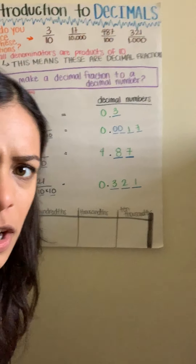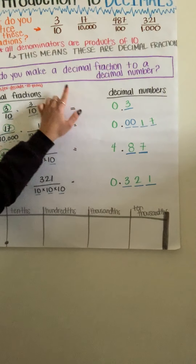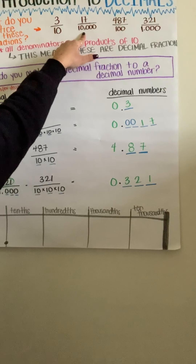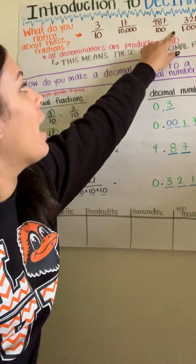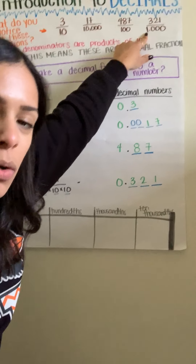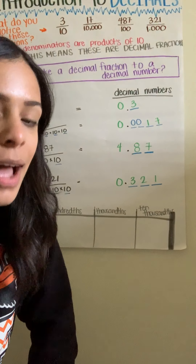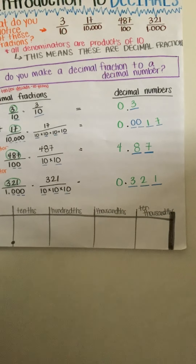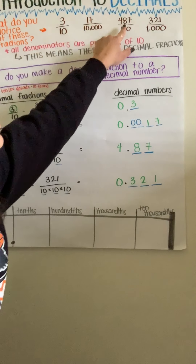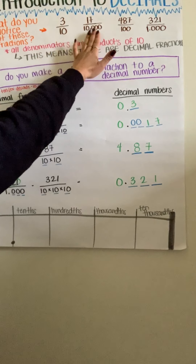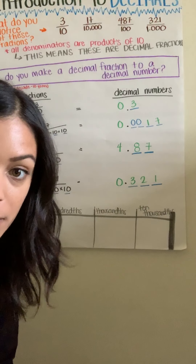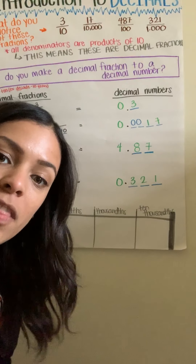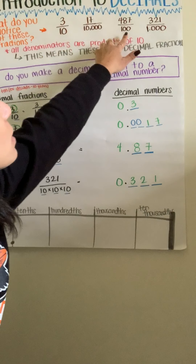So if you look at this chart here, we have some decimals on the top: 3 tenths, 17 ten thousandths, 487 hundredths, and 321 thousandths. All of these have something in common. When we look at these and compare these fractions, we notice they all have a number in the numerator and a number in the denominator. The sizes of the fractions are a little bit different — some are larger than others based on how many fractional units they're split into.